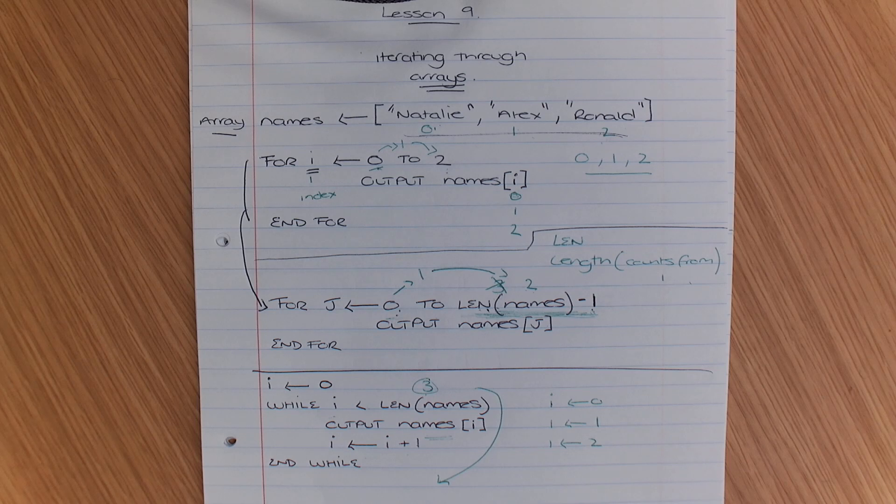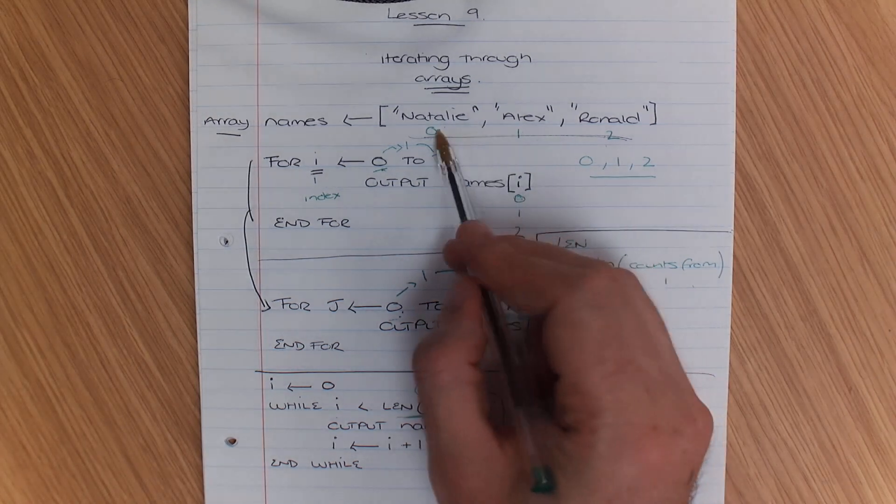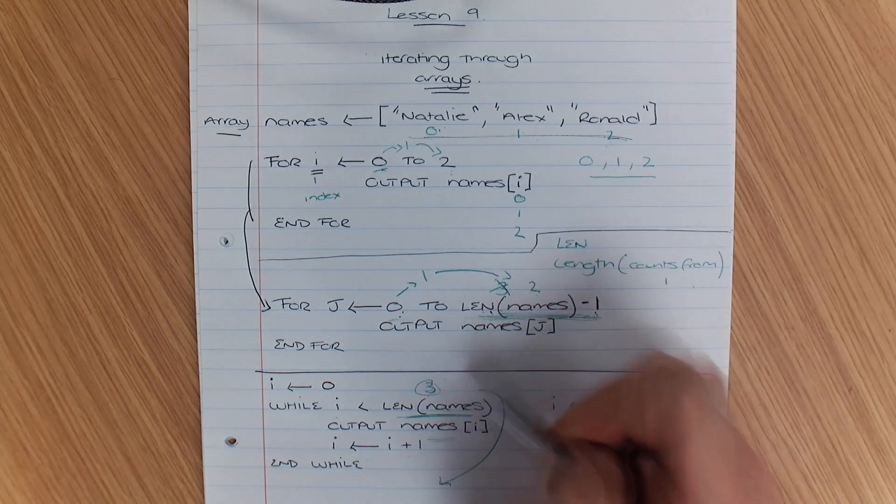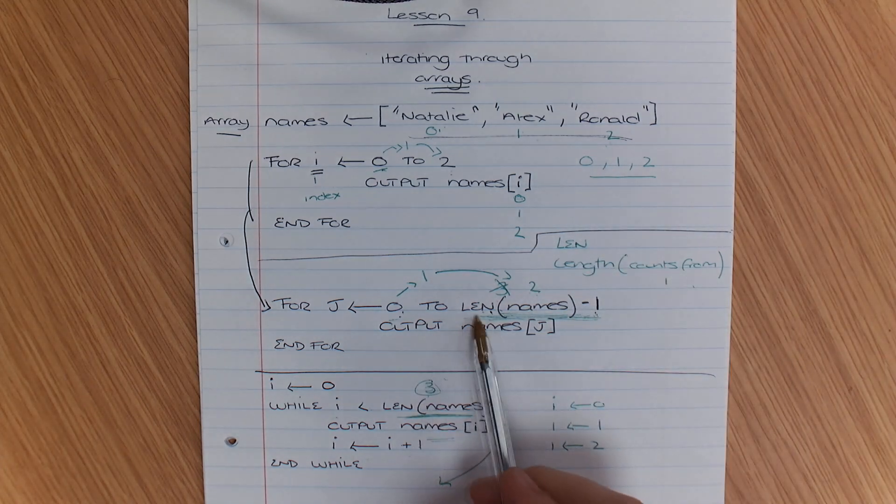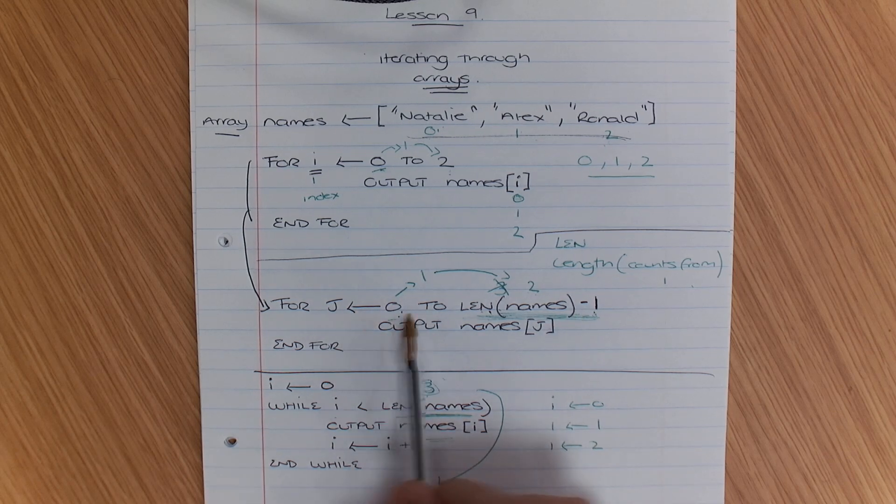And then, just going to quickly explain, you don't need the minus 1 here, because we've said less than 3. So it wouldn't go out of this, because 2 is less than 3. So the only time you really need to use the minus 1, I would say, is during a for loop.